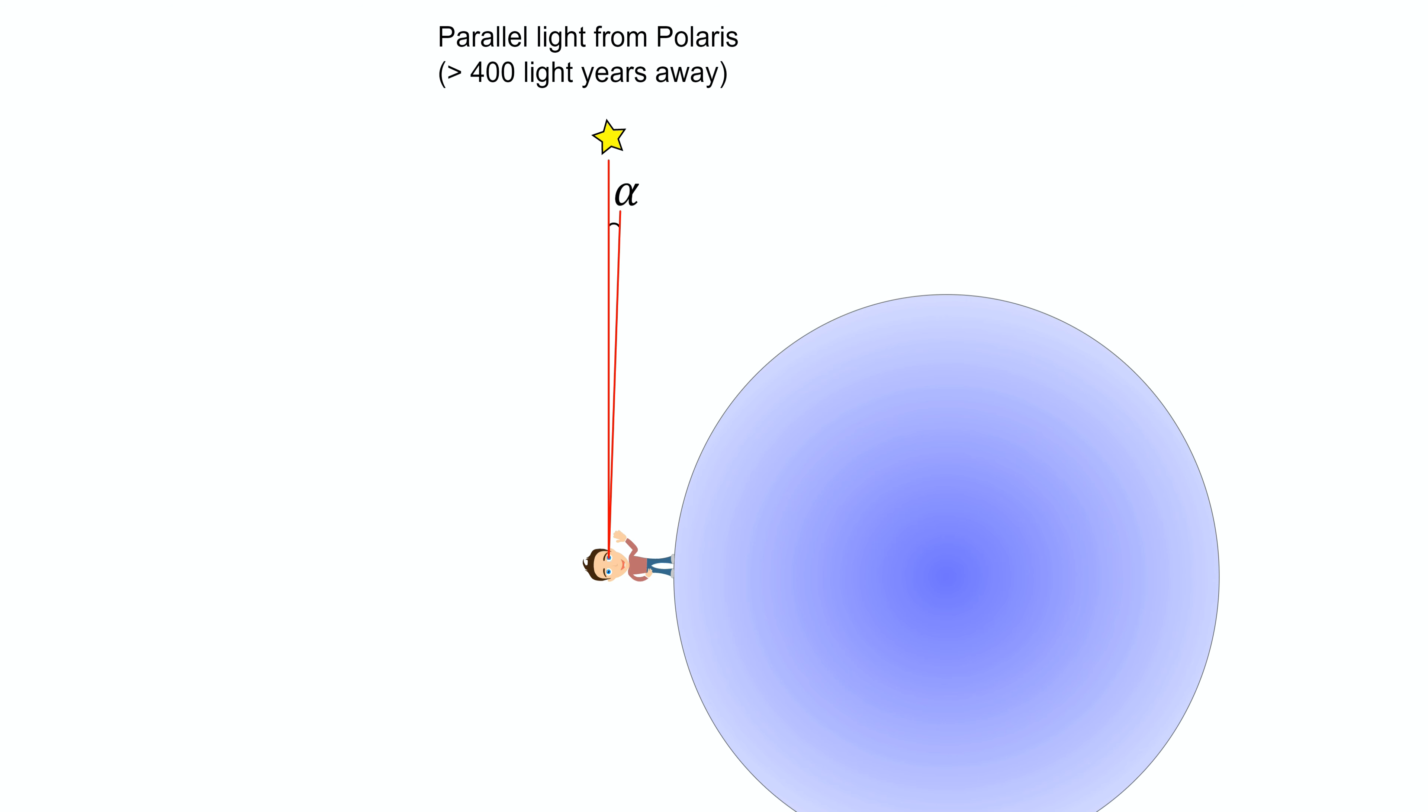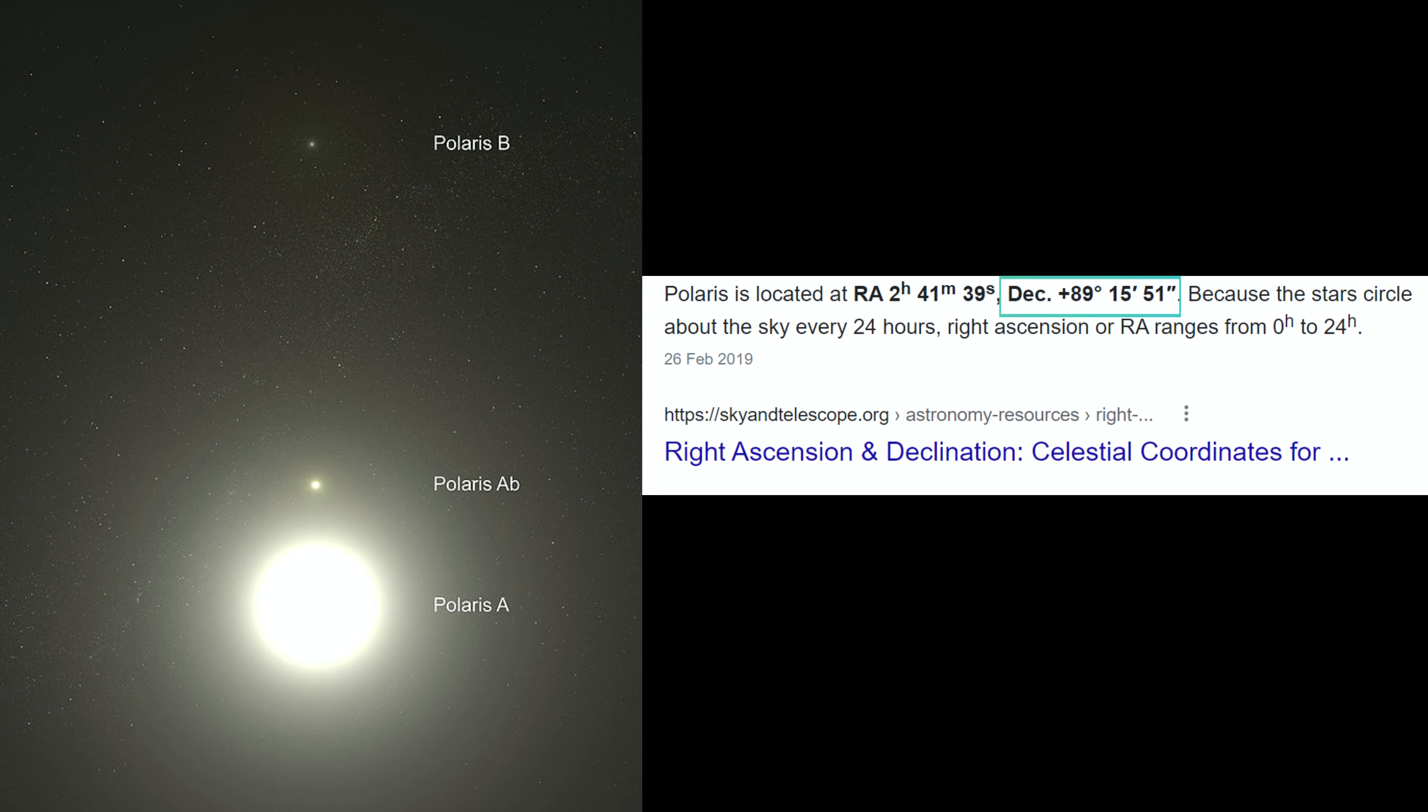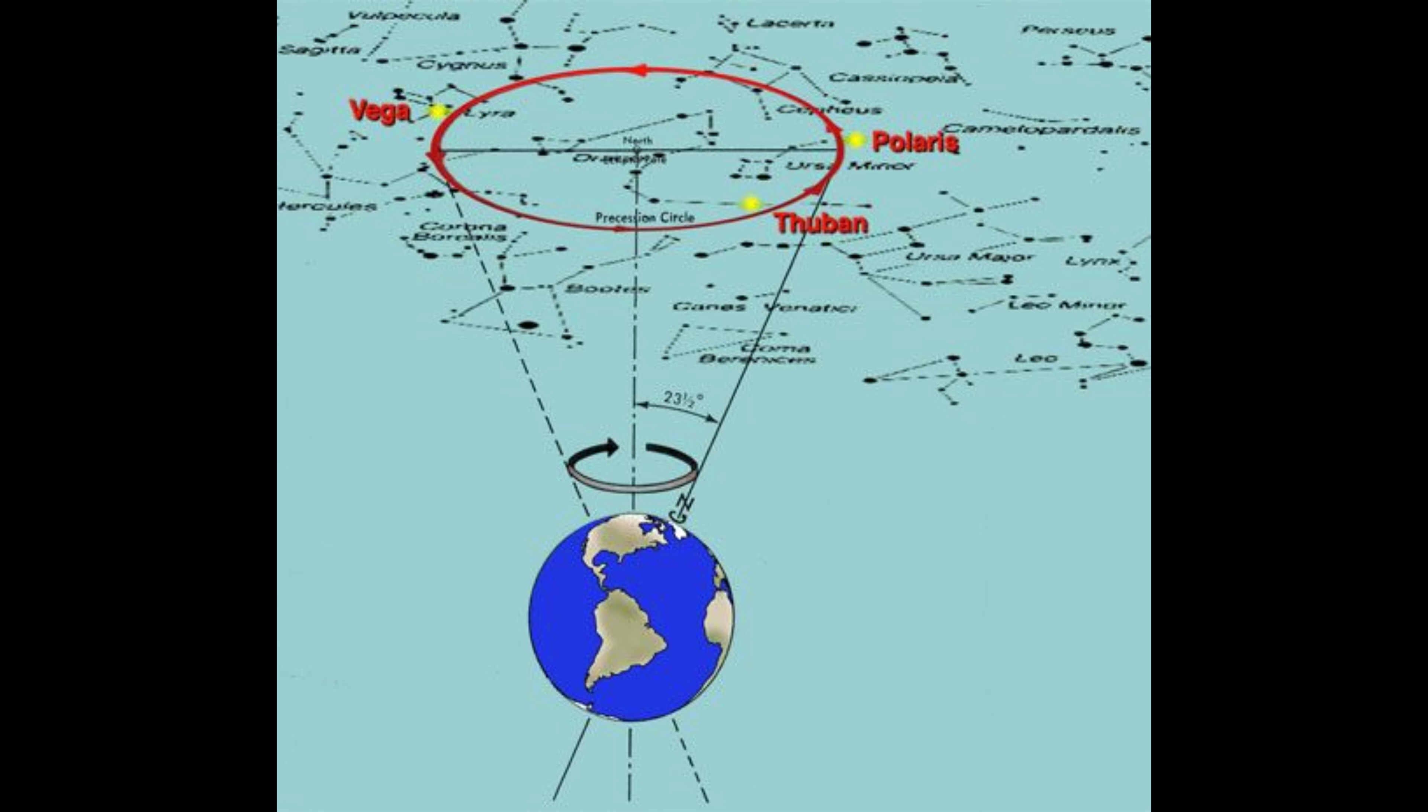Before we can find this angle, we need to be able to find Polaris first. Polaris is also called the North Star, because it's currently only around 0.7 degrees from true north. In the year 2100, it will be 0.45 degrees from true north. This changes over a 26,000 year cycle called the precession of the equinoxes.